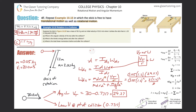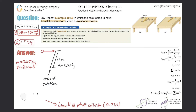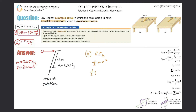Now moving on to Part B. The kinetic energy before the collision is simply the disc moving linearly, so it's one half M V squared: one half times 0.05 times 30 squared. That works out to 22.5 joules. So the kinetic energy before the collision is 22.5 joules.